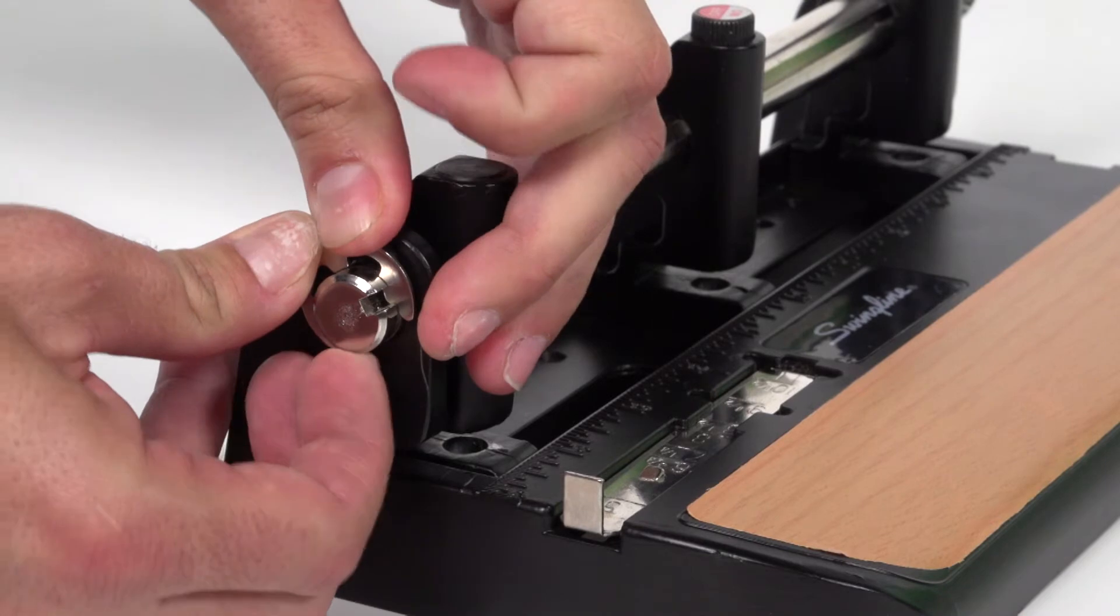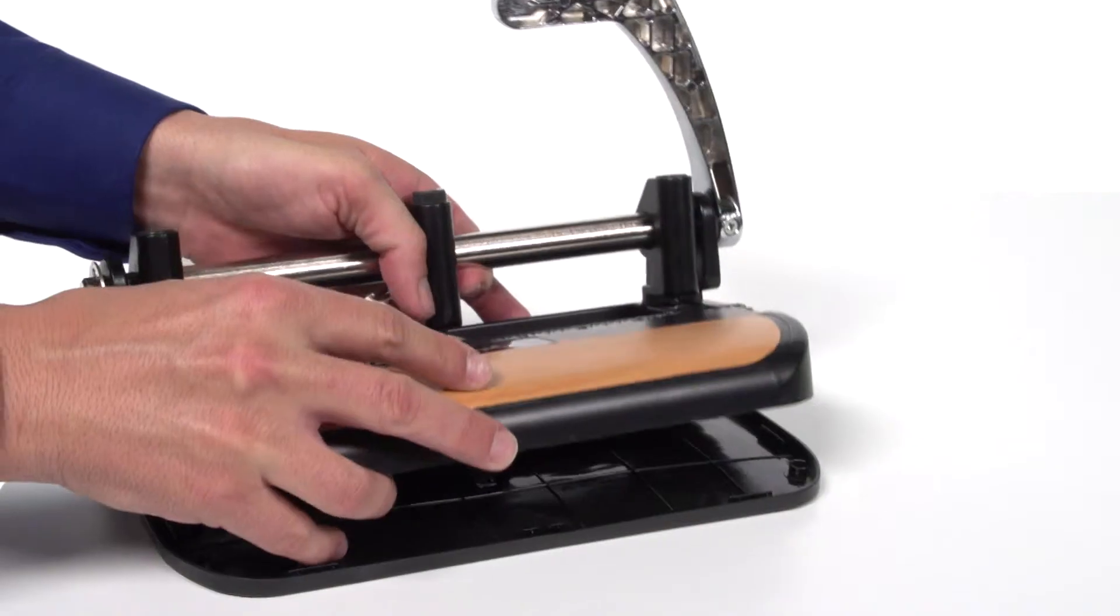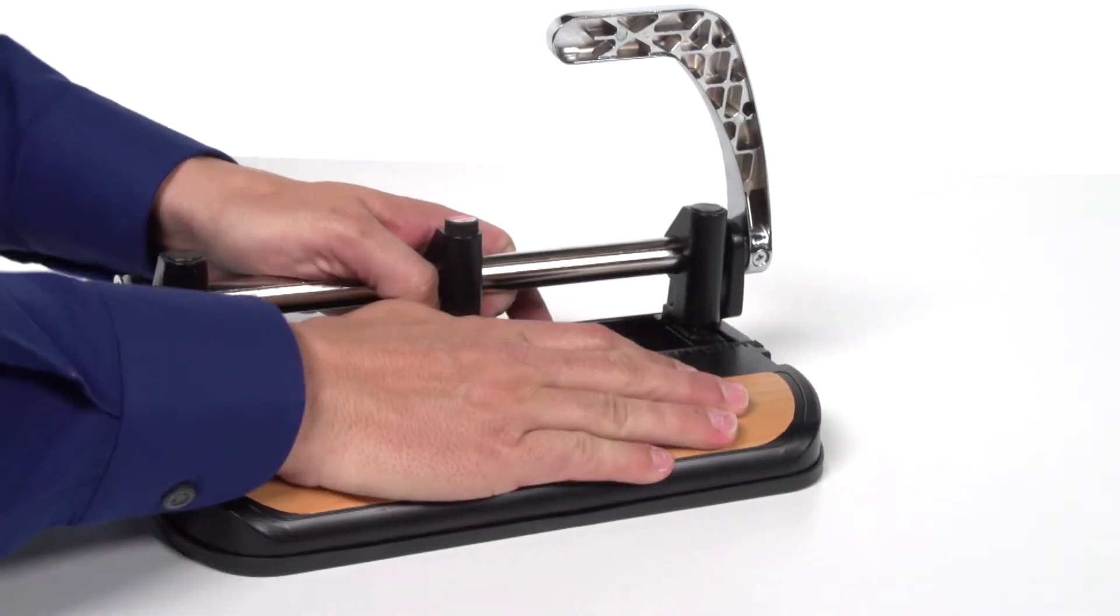Mount the C-shape retainer back into its original position. Attach the chip tray and there you have it.